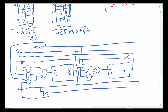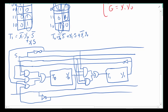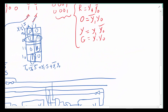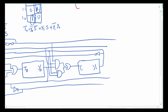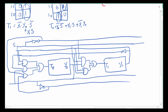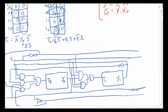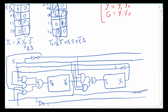So we have T1 complete. The next thing we need to build is the external outputs: red, orange, yellow, and green. Let's see if we can get that done somewhat cleanly. We'll build these higher up. Starting with red — red is Y1-not AND Y0-not. There's my Y1-not and there's my Y0-not. Red is done.